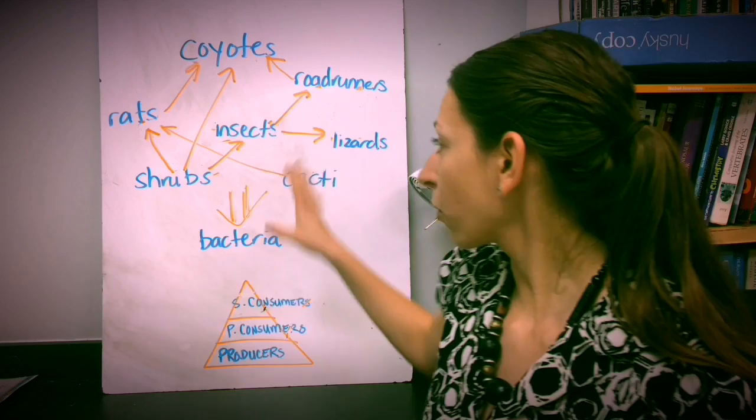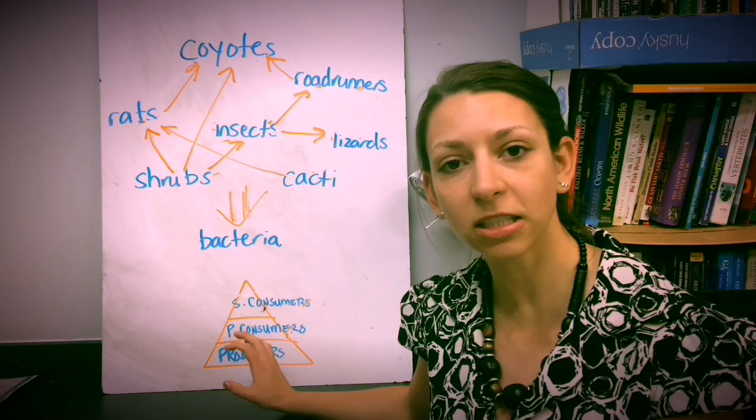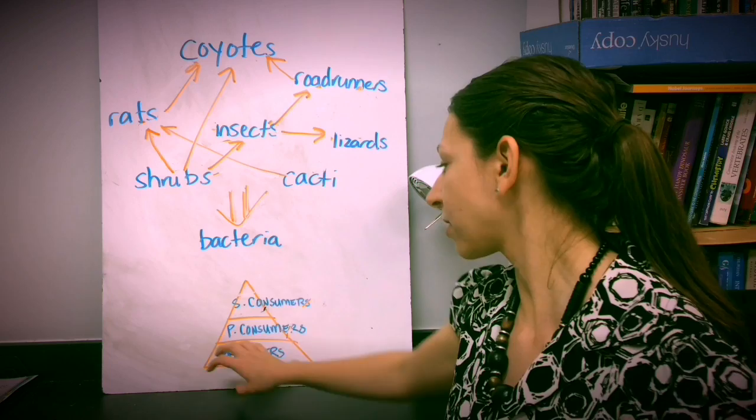Now, remember we can also rearrange this information into a trophic pyramid. We have another video on this, but keep in mind that producers are going to have the greatest amount of energy in any system, and they'll be at the bottom. Generally, they're also greater in number too, not always, but they'll be at the bottom of our trophic pyramid.